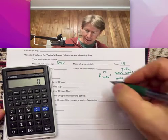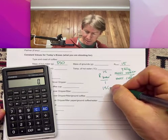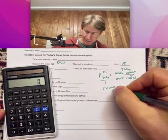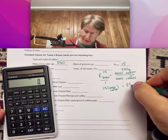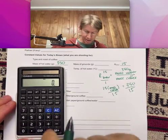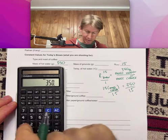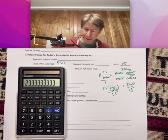If I cross multiply, it's going to be 15 times my mass of coffee equals 350. Divided by 15, I get 350 divided by 15, I get 23.33 grams. Our scale only goes to the tenths place.